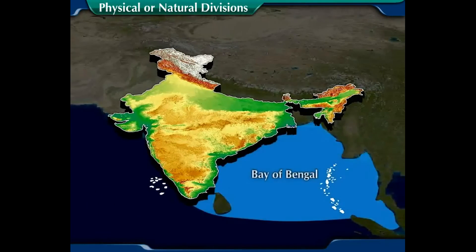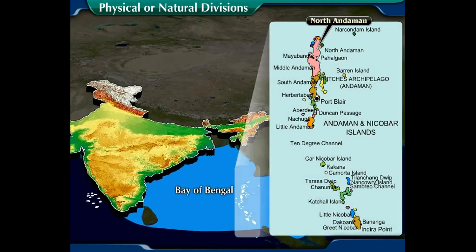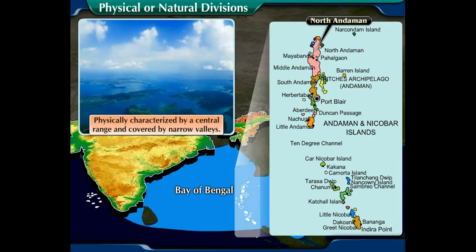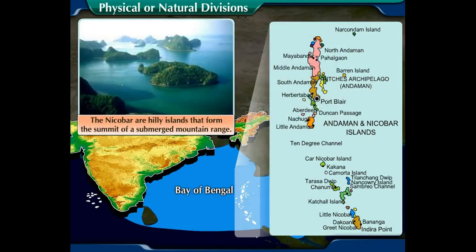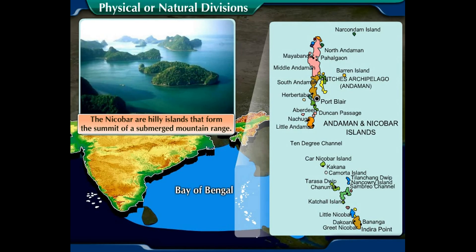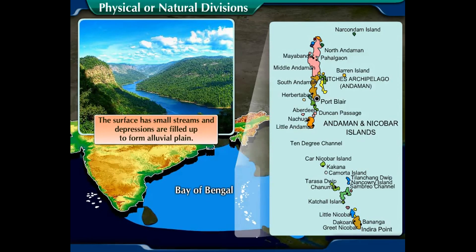Number two, the Bay of Bengal islands comprise the Andaman and Nicobar Islands. The North Andaman Islands are physically characterized by a central range covered by narrow valleys. The Little Andaman is almost flat except for the northern hilly tract. The Nicobar are hilly islands that form the summit of a submerged mountain range. The surface has small streams, and depressions are filled up to form alluvial plains.